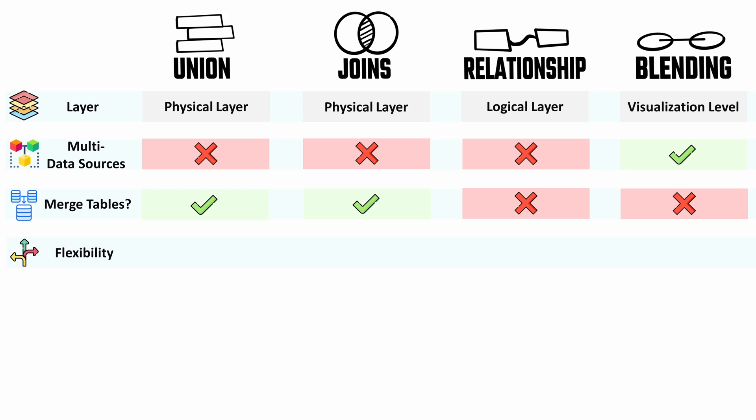The next point is about flexibility. With unions and joins, decisions made at the data source can affect all worksheets and visualizations. But with relationships and data blending, you have much more flexibility — for example, with data blending you can make decisions on each individual worksheet page.